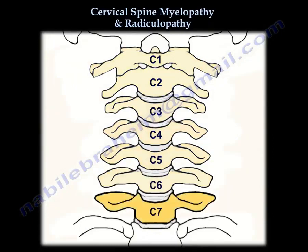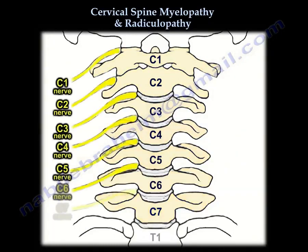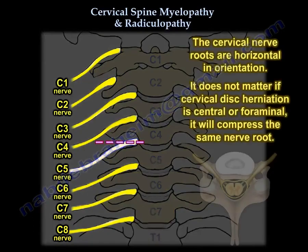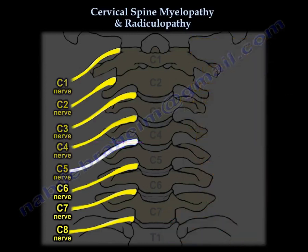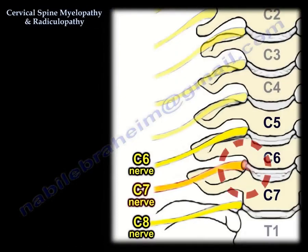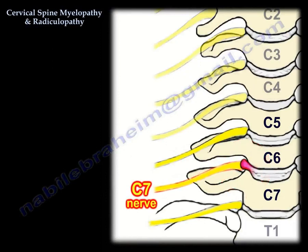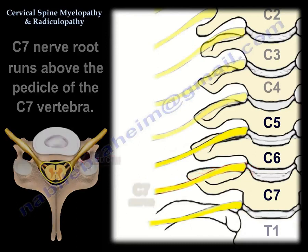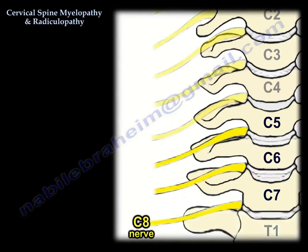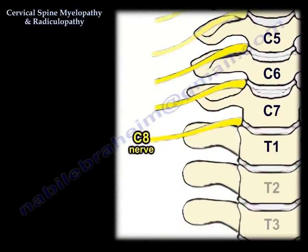Let's understand the arrangement of these nerve roots. You have 7 vertebrae but 8 nerve roots. The cervical nerve root is horizontal in orientation, so it doesn't matter if the disc is central or foraminal — it will get the same nerve root. For example, at the level of C6-C7 the C7 nerve root is affected. This nerve root runs above the pedicle: C7 nerve root runs above the C7 pedicle. C8 nerve root runs above the T1 pedicle, and then the T1 nerve root runs below the T1 pedicle.